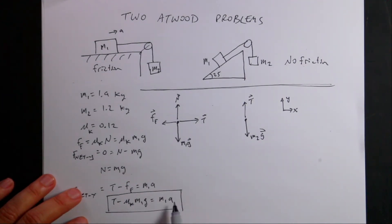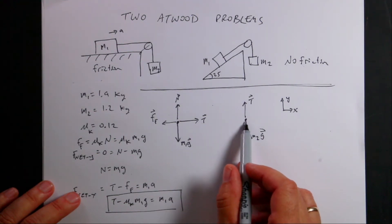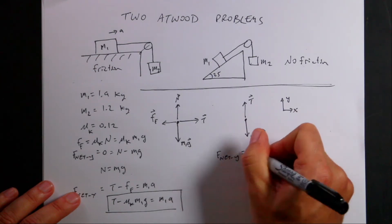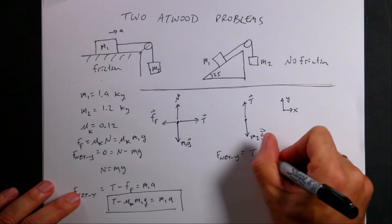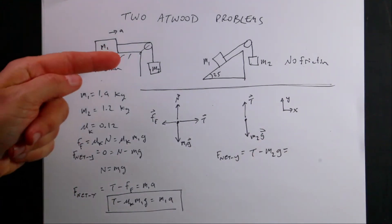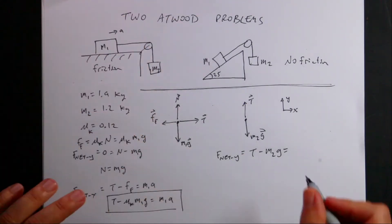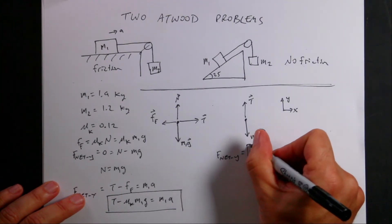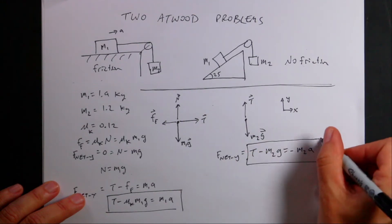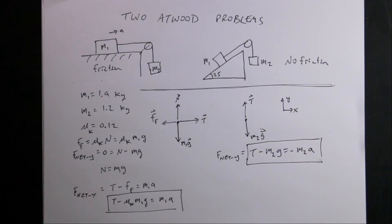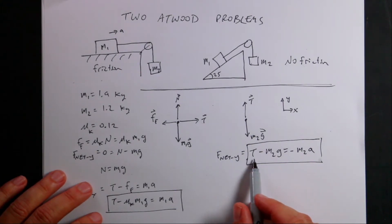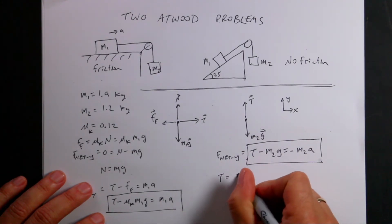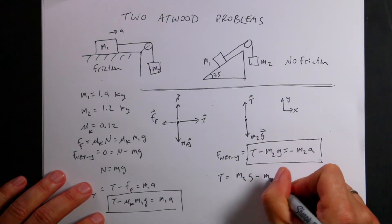Looking at mass 2, F_net_Y equals T minus M2g. If M1 is accelerating that way, M2 has to be accelerating downward, so this equals negative M2a. Now I have two equations and two unknowns. To find the acceleration, I'll solve this second equation for T: T equals M2g minus M2a, and plug that into the first equation.